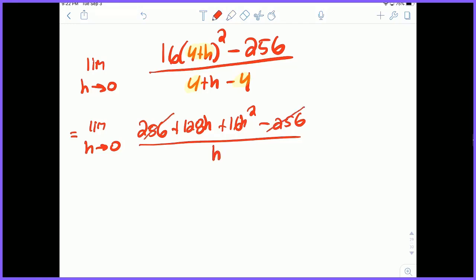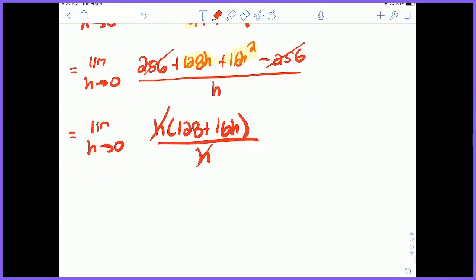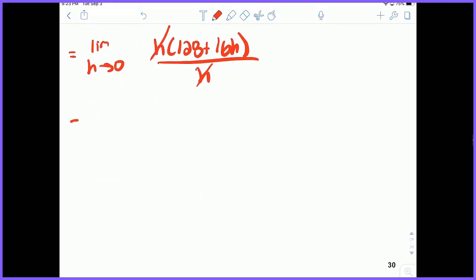256 and 256 cancel. What's more interesting, the only two terms left in the numerator both contain h, right? So let's factor it out. So this is the limit as h approaches 0 of h times (128 plus 16h) all divided by h. And the h's cancel. And what that leaves me with is the limit as h approaches 0 of 128 plus 16h.